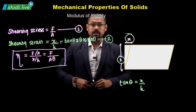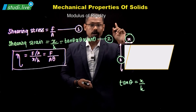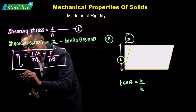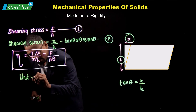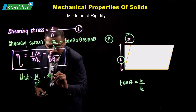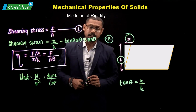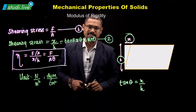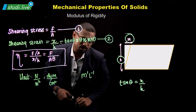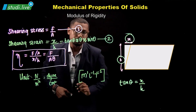Modulus of rigidity is also a type of modulus of elasticity, so its units and dimensions are the same. The unit is Newton per meter squared in the SI system, whereas in the CGS system it is dyne per centimeter squared. The dimension is M¹L⁻¹T⁻². Make sure you use square brackets to represent dimensions.